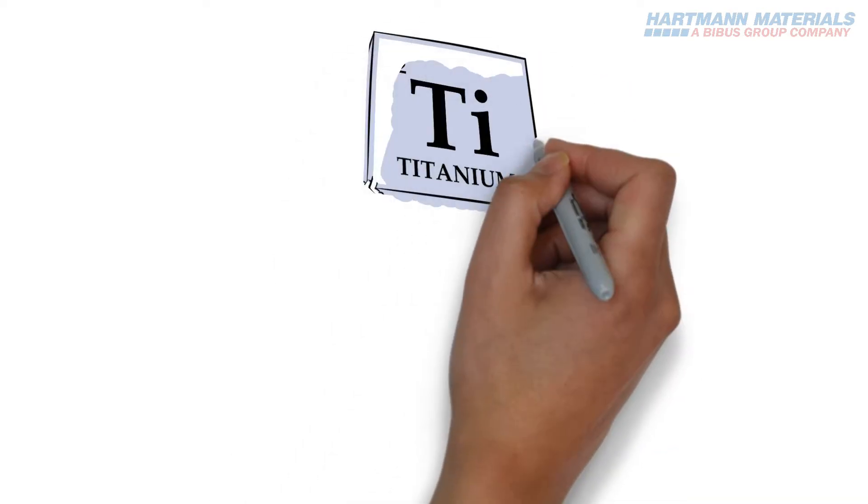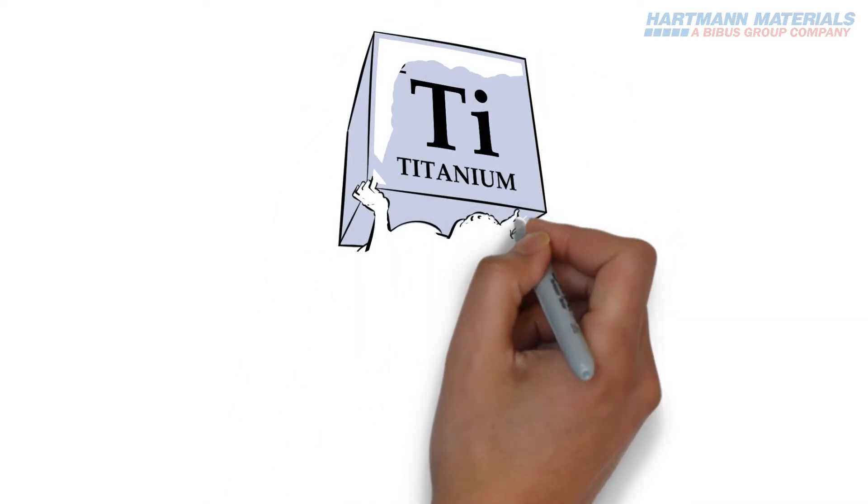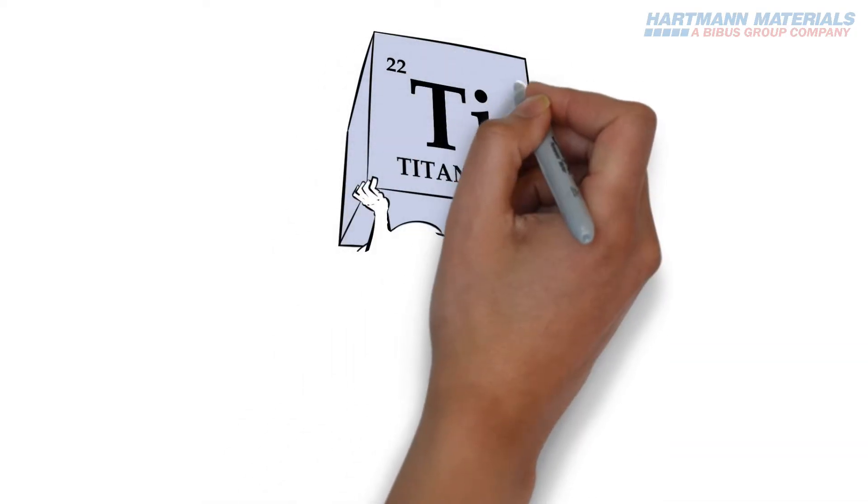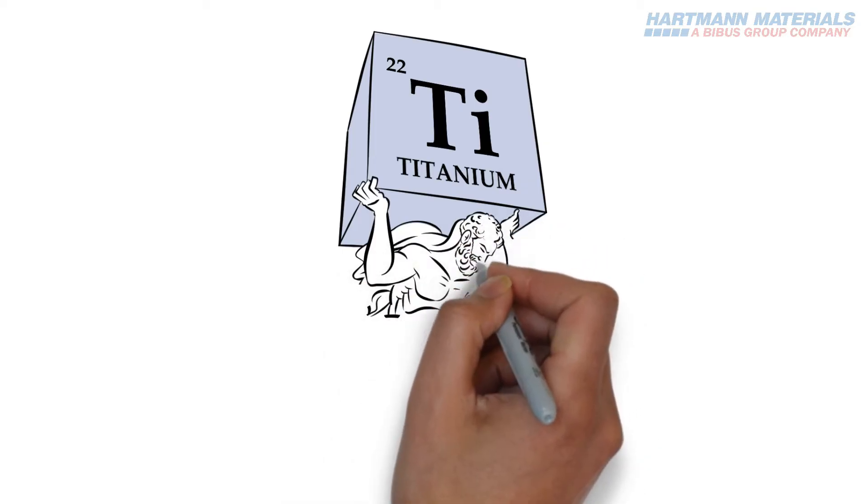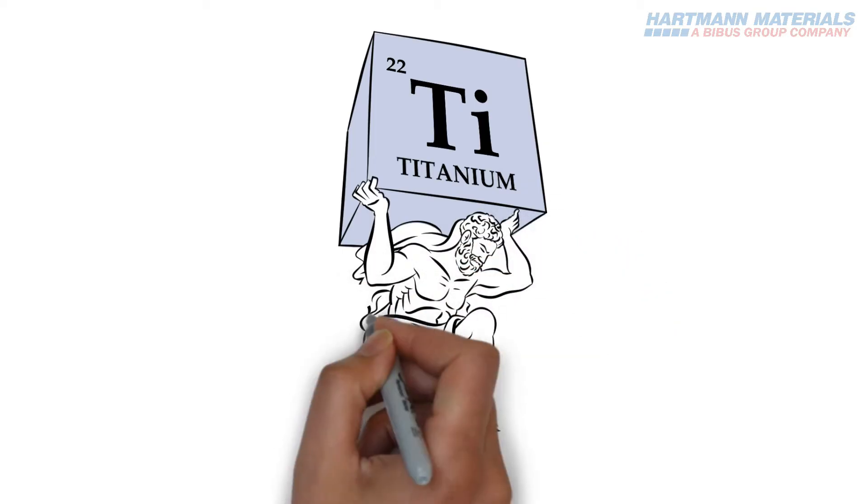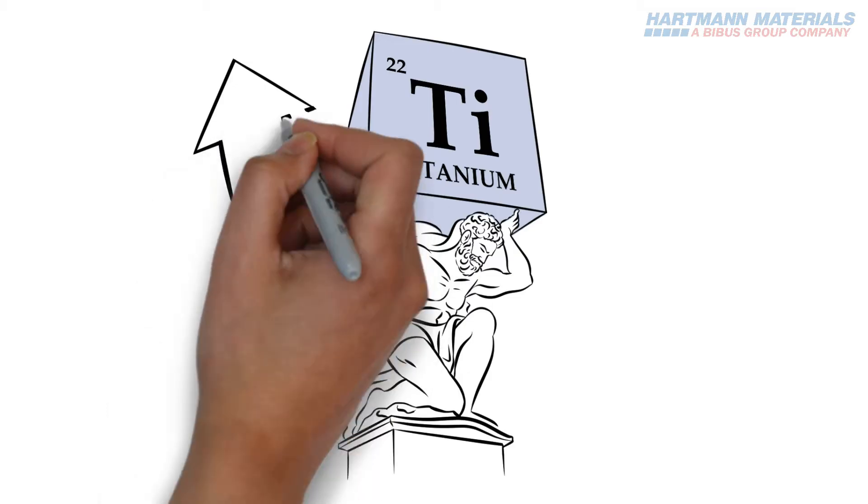How Titanium is Made. Discovered in 1790, titanium was first industrially produced in the early 1950s. Named after the titans of Greek mythology, titanium has a number of equally impressive characteristics.